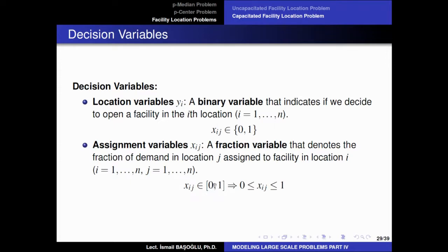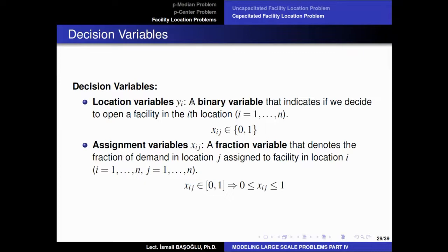For this model, due to the capacity and demand constraints, the extreme points of the feasible solution space may contain rational — non-integer — values. The location variables Yi are still binary because you either choose to open a facility or not at a location. Note: there is a misprint here — it should be Yi, not Xij. Yi is a binary variable indicating whether we open a facility at the I-th location.